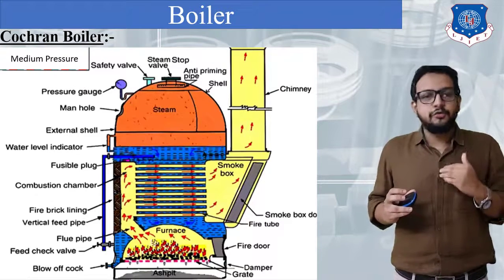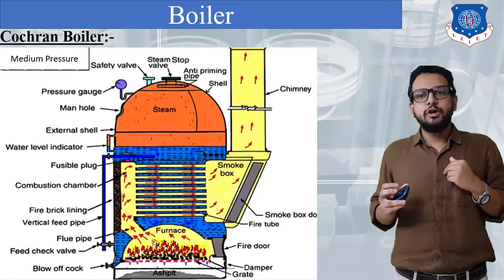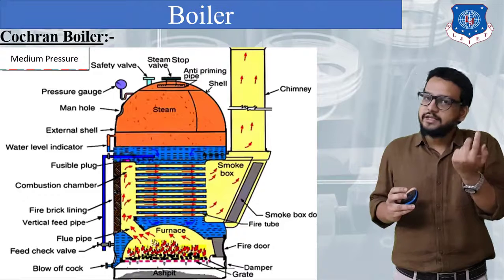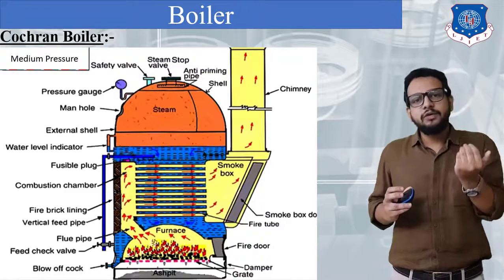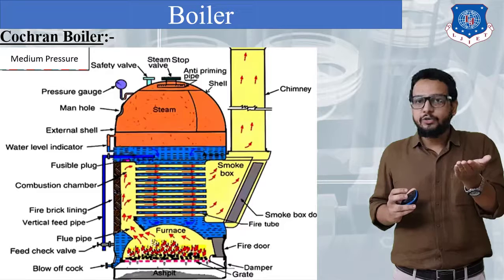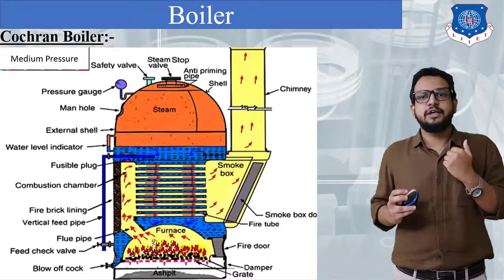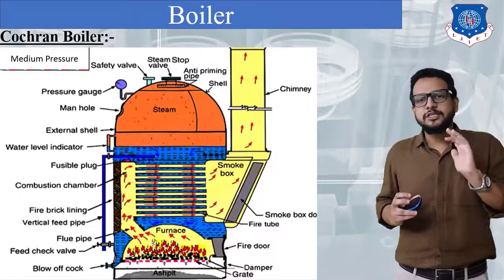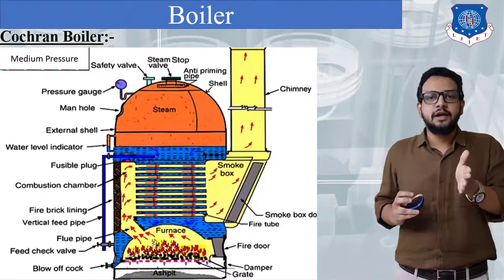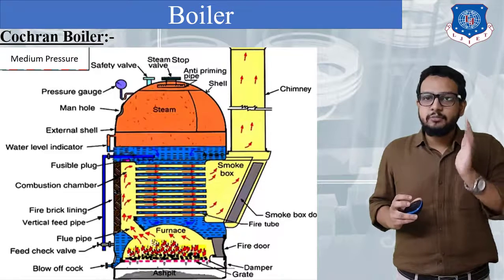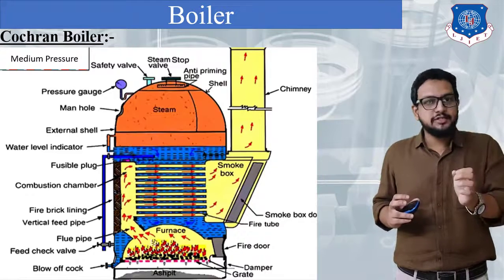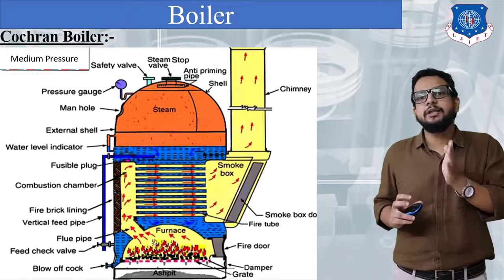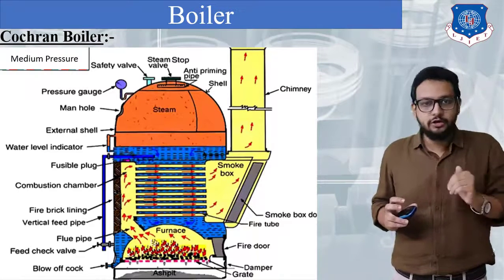Then after comes the construction of this boiler. In construction you have to mention two most important types of parts: first is mountings and second is accessories. Mountings are the parts which are mounted on the outer surface of a boiler shell, whereas accessories will be mostly provided inside the boiler shell. The main difference between mounting and accessory is that mountings are necessary, compulsory parts which must be present on a boiler shell, whereas accessories are not compulsory — if provided, they will increase the efficiency of a boiler.